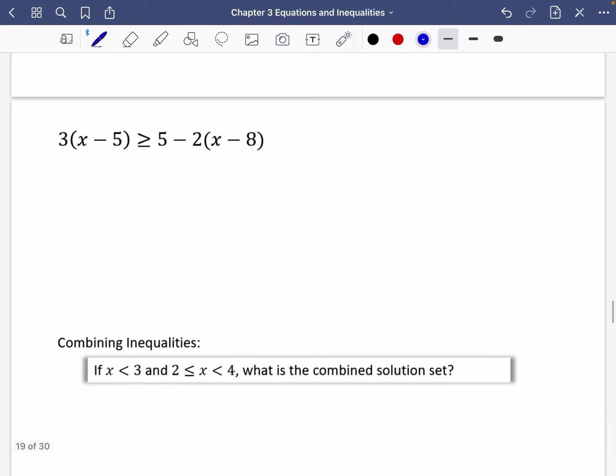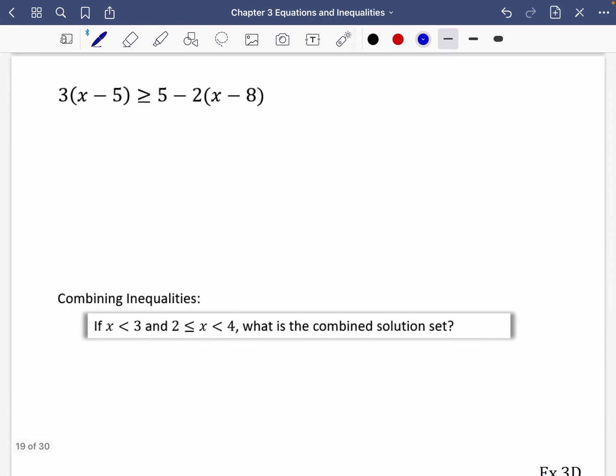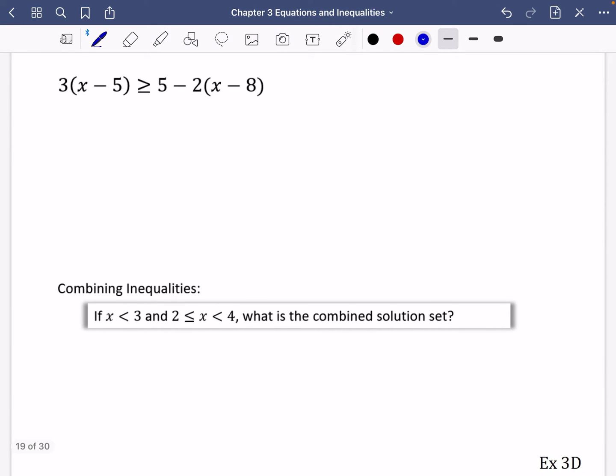Let's try a couple more. So looks a bit more complicated, just requires a bit of expanding, first of all. So I'm going to say three X minus 15 is greater than or equal to five minus two X plus 16 because of the two negatives. So that's three X minus 15 is greater than or equal to 21 minus two X. So I'm going to add the two X to the other side. So that is five X.